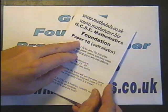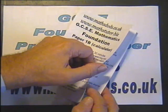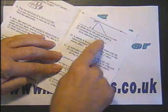GCSE Foundation Mathematics, Paper 1B, which is a calculator paper, and we're actually going to go through this question number 10.